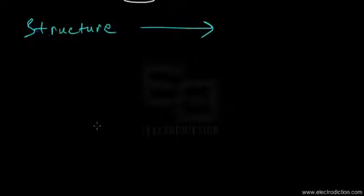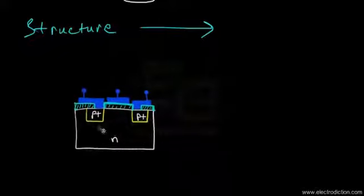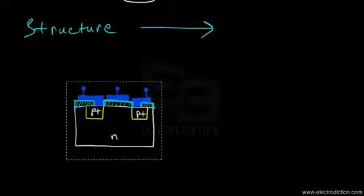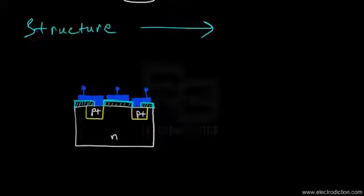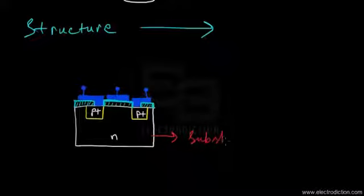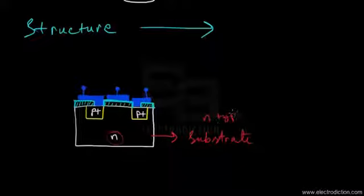To understand how the MOSFET works and functions, we need to go to its structure first. Looking at the diagram, the white region basically represents a substrate. The n-type symbol on the substrate indicates it is basically an n-type semiconductor material forming the substrate.